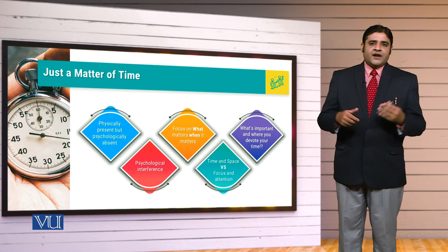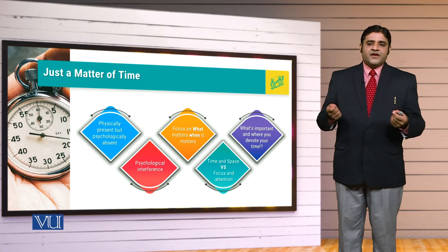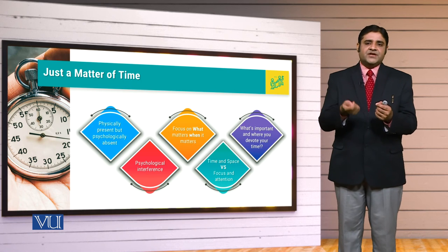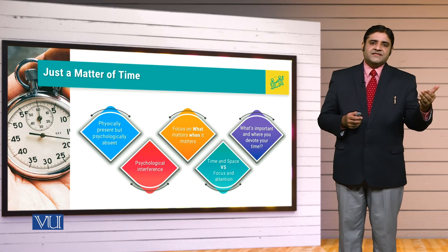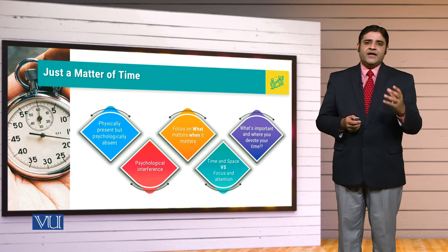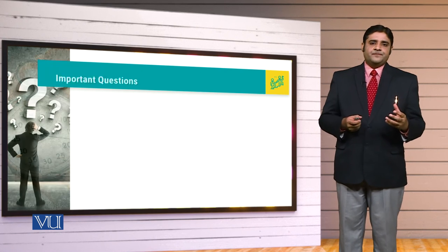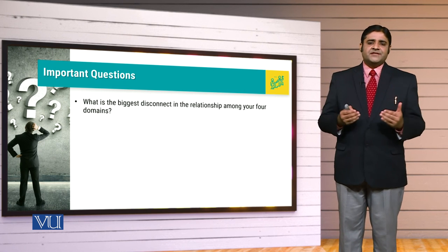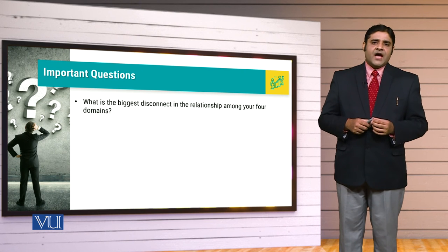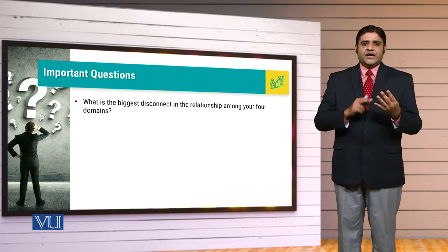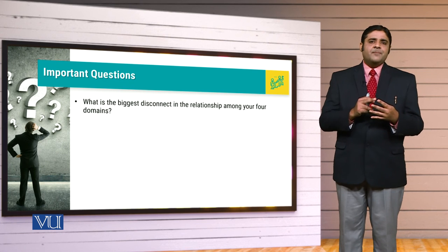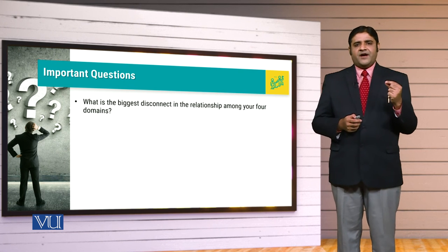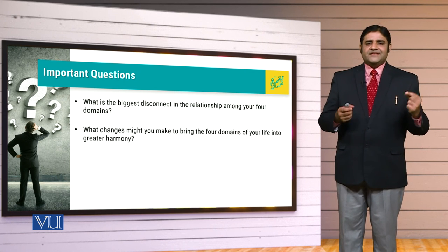So it is just a matter of time, and you also need to find out what's important and where you devote your time. The level of importance of a thing, a person, or a place in your life, and your attention toward them — is there a connection between these two? All these aspects will actually lead us to certain questions, for example: what is the biggest disconnect in the relationship among your four domains? What do you see across these four areas — community, yourself, home, and profession — where do you feel something is missing, something you need to rectify, something you need to change?